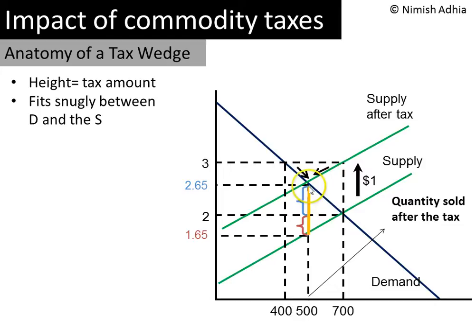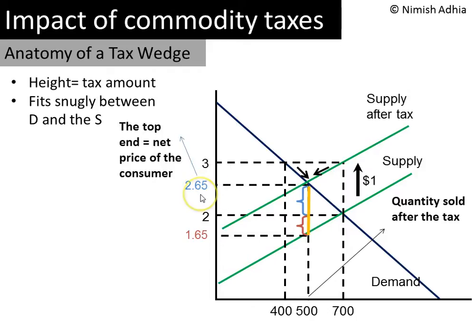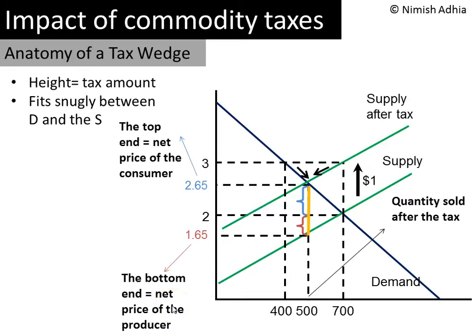Pay attention to the top end of the tax wedge — this height of $2.65. What is this $2.65? It is the price that the consumer pays after the tax. And this is true in general: the top end of the tax wedge will always give you the price paid by the consumer after the tax. Similarly, the bottom end of the tax wedge — this height of $1.65 — gives you the price received by the producer after the tax. So the top end is the price paid by the consumer, and the bottom end is the price received by the producer.